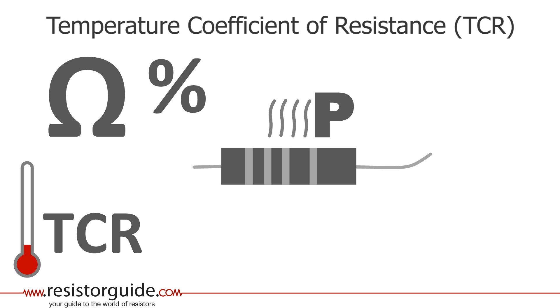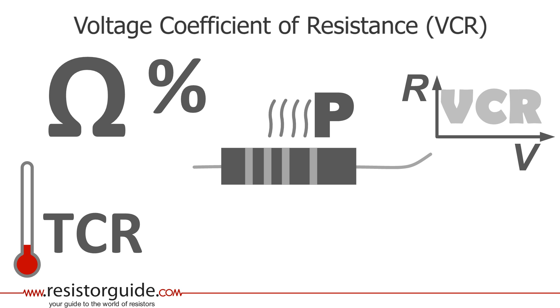This is expressed in parts per million per Kelvin. The voltage coefficient of resistance, or VCR, is a measure of how the resistance changes as the voltage over the resistor varies.